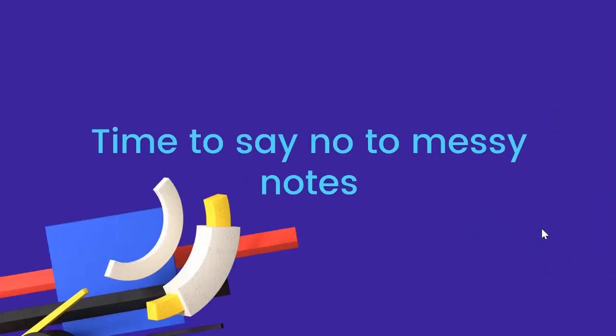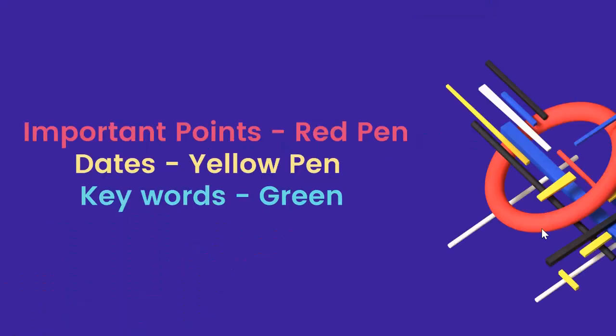Yaha pe hum kya karenge? Hum log aise notes banayenge jo bahut acchhe se bane ho, jinmei kuch colors hain, aur un color ka kuch meaning hain. For example, hum notes banate hai usually theory subjects ke. Agar numerical subject hai, toh unke hum notes nahi banate, theory ke hi banate hai. Numerical ke bhi bana sakte hai agar if you want to note down the formulas.